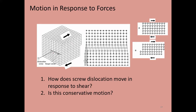We can also think about what would happen to a screw dislocation. The top part of the crystal is sheared back and to the right, the bottom part forward and to the left. How would this dislocation move?